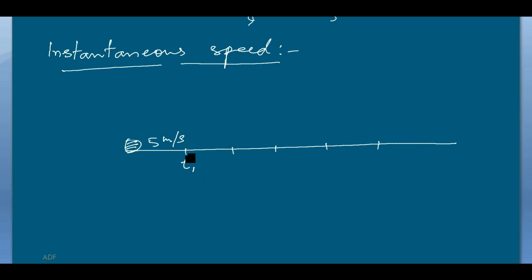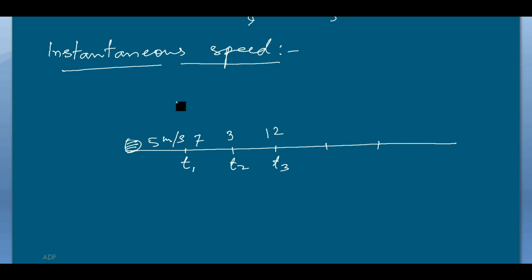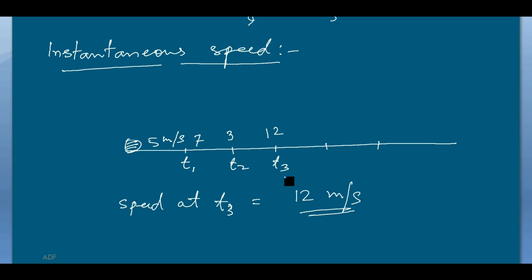At T2, its speed changes to 3 meters per second, and at T3 it becomes 12 meters per second. So the speed of the object is varying. The speed of that object at any point in time is called instantaneous speed. For example, at T3 instant, the instantaneous speed is 12 meters per second.